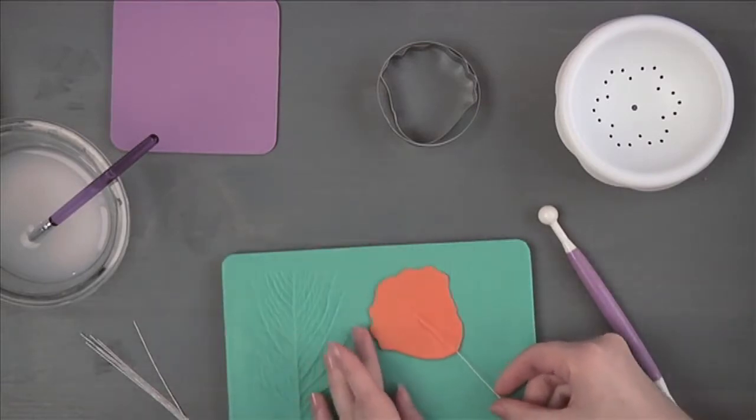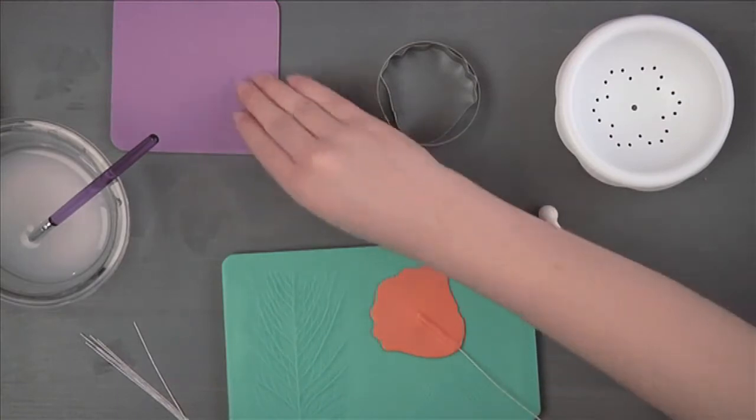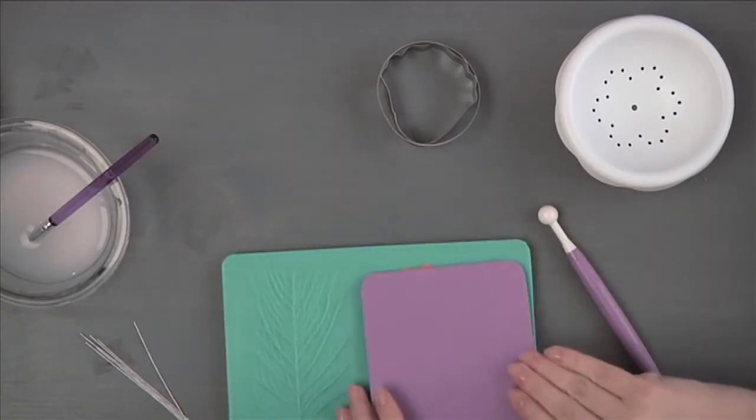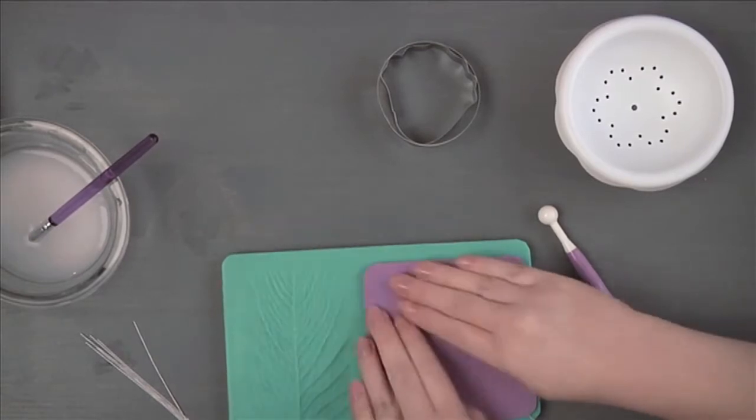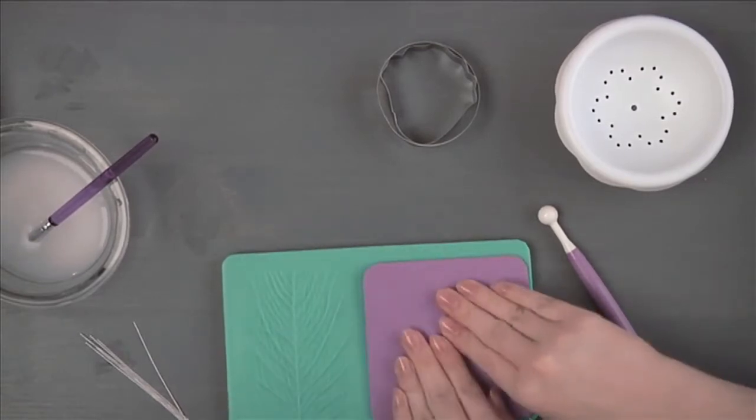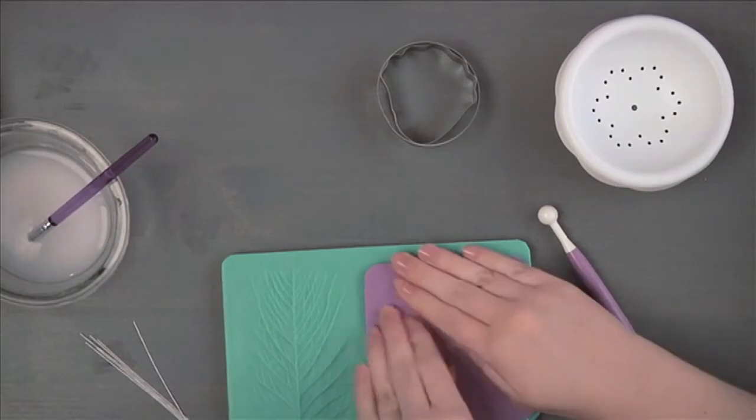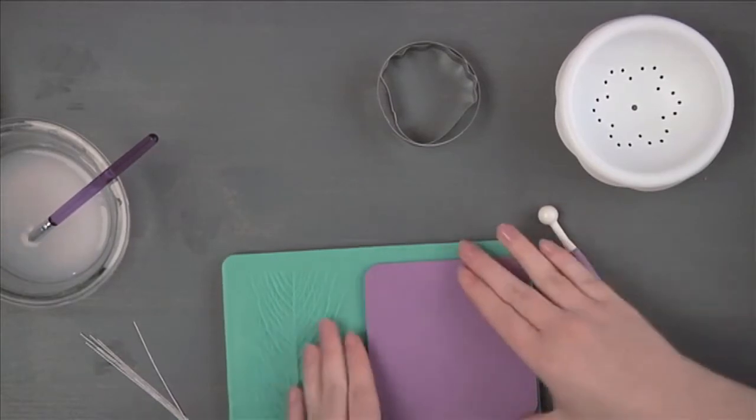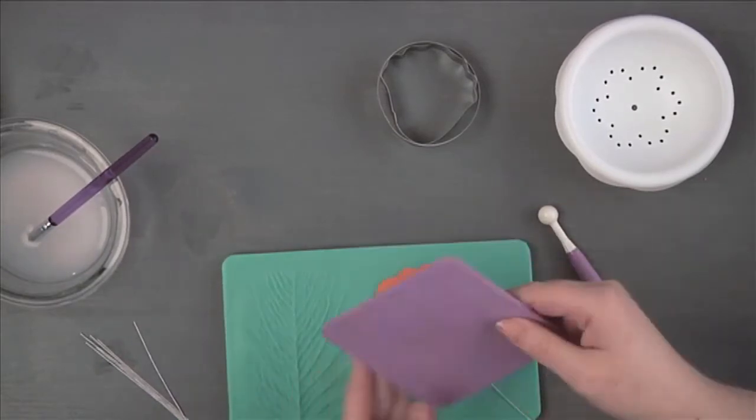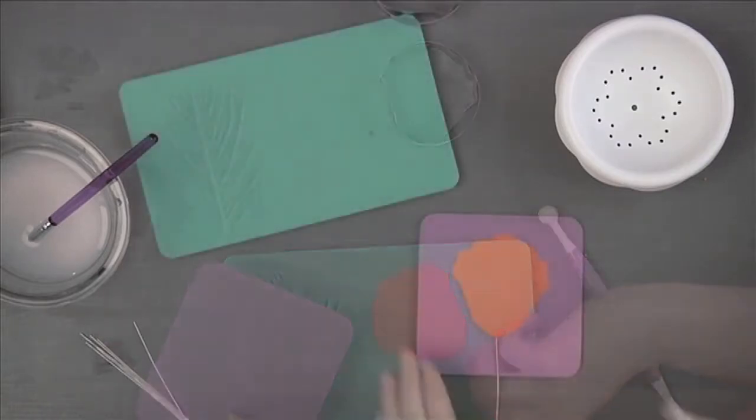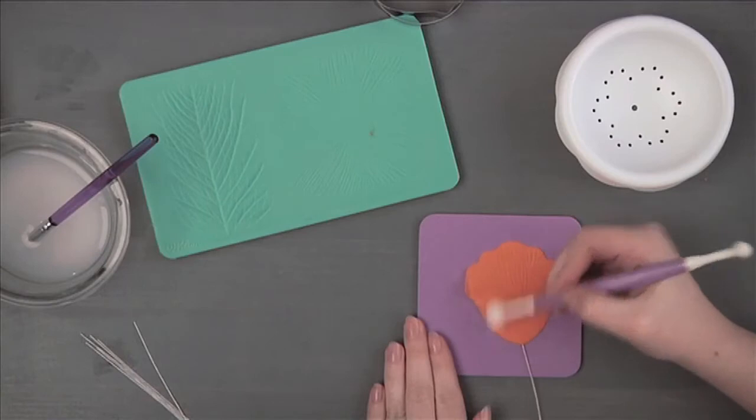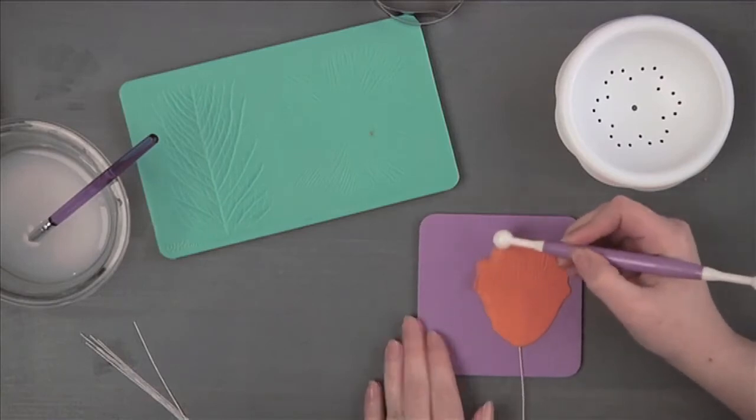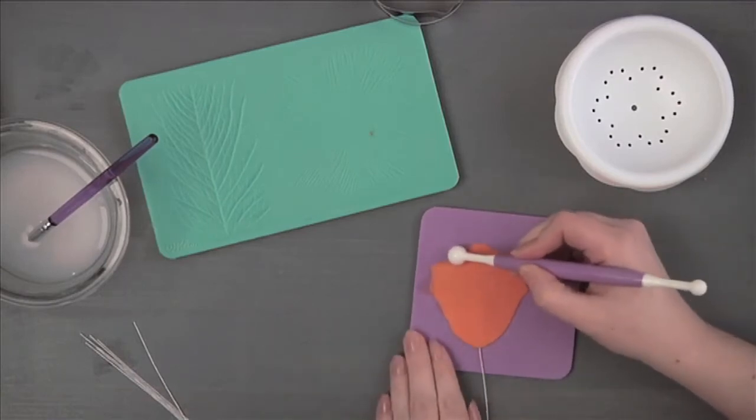Place the petal wire side up on a cornstarch dusted flower impression mat. Dust with cornstarch and press with thin foam to imprint the veins. Place the petal imprint side up on cornstarch dusted medium foam. Using a ball tool, soften the outer edge of the petal to ruffle.